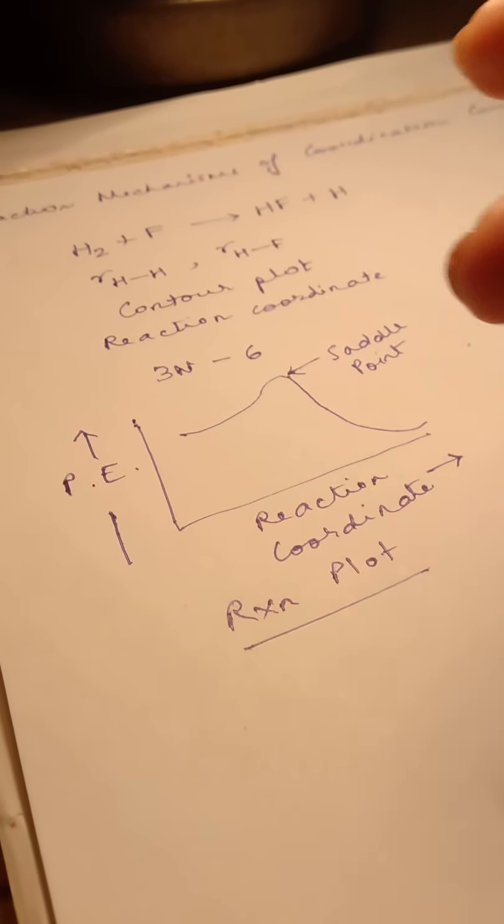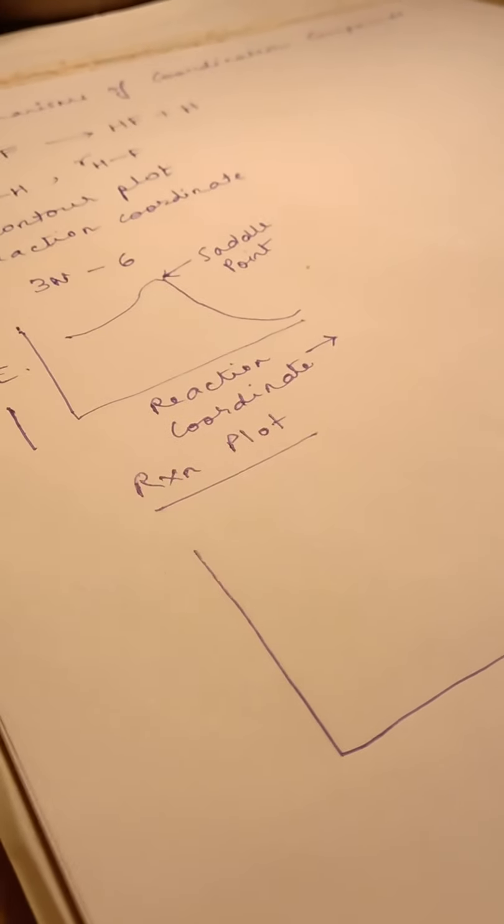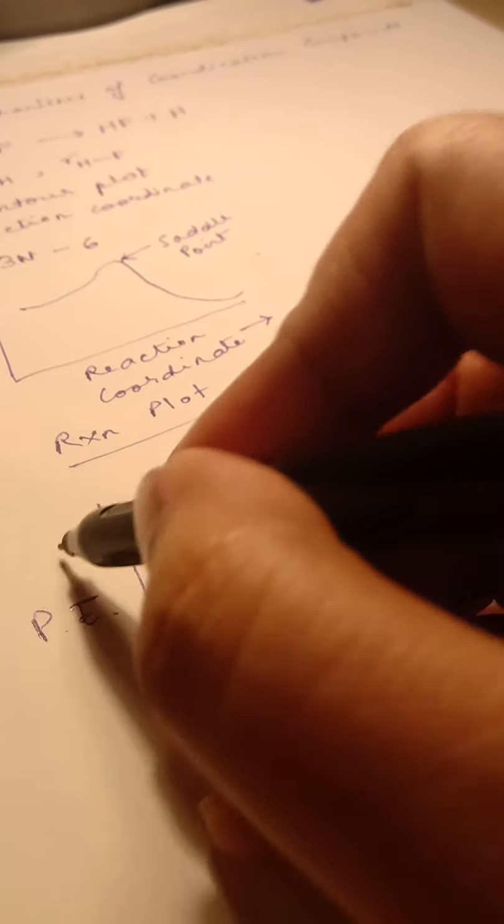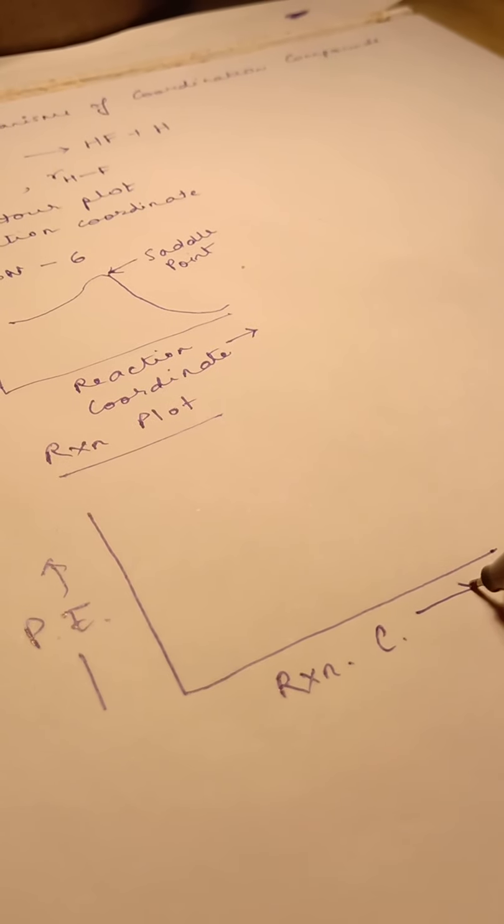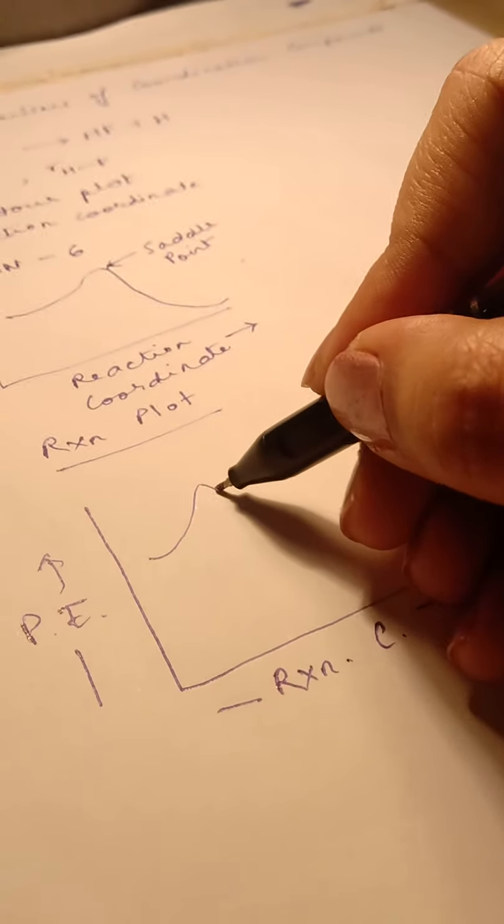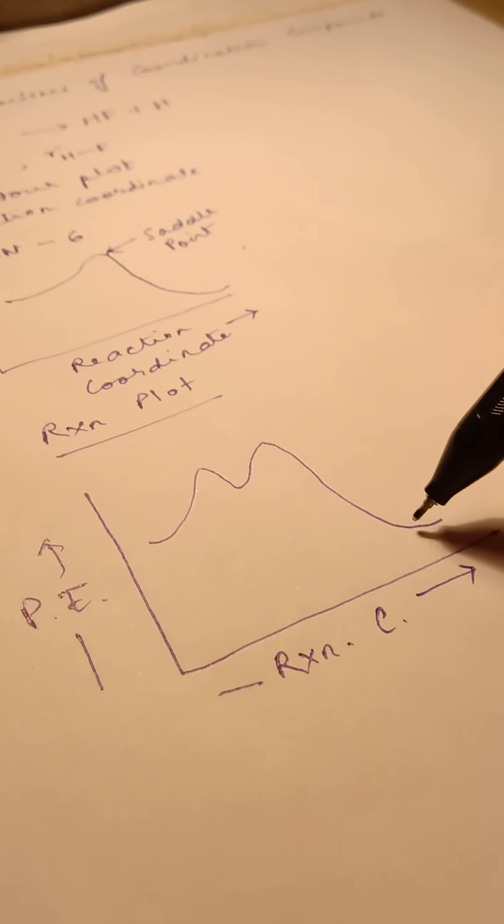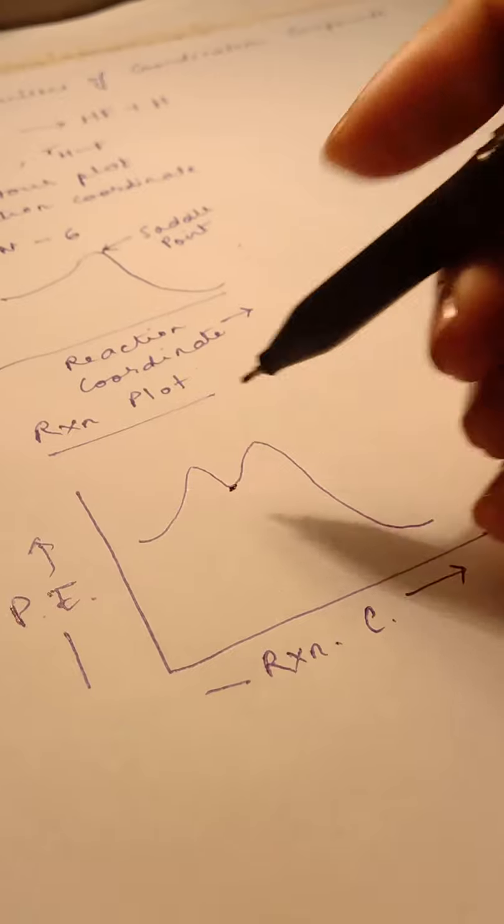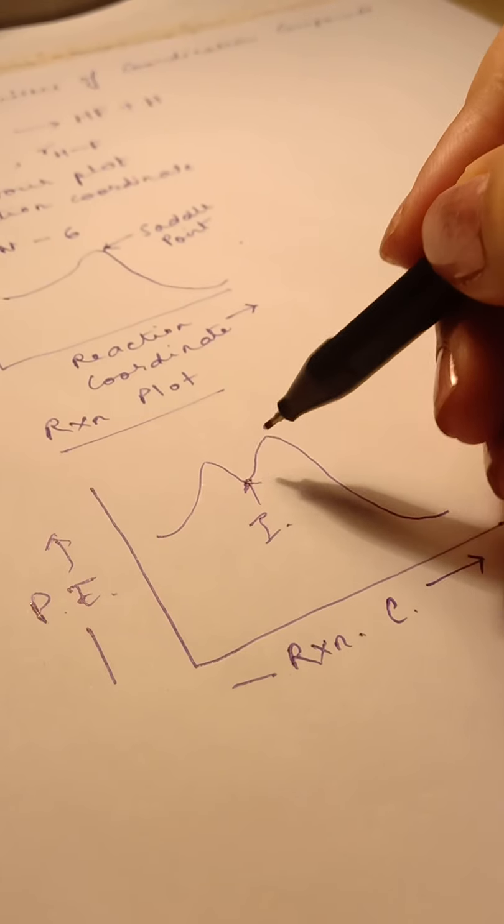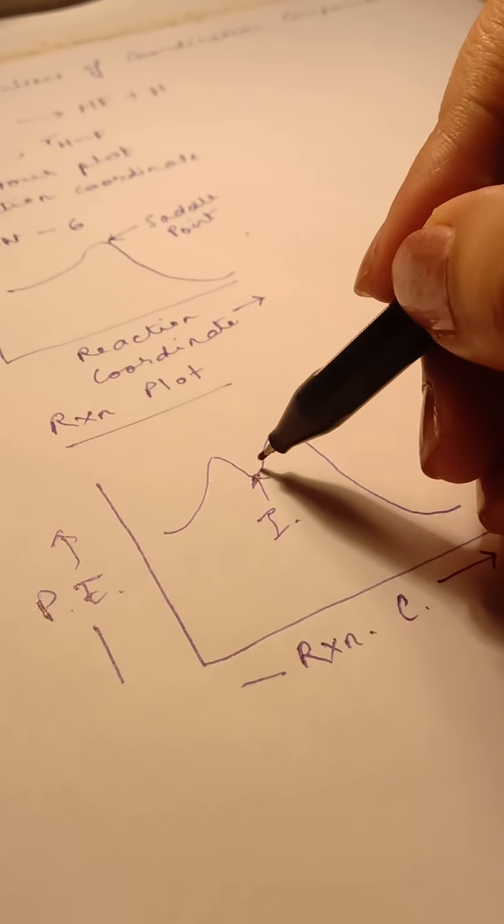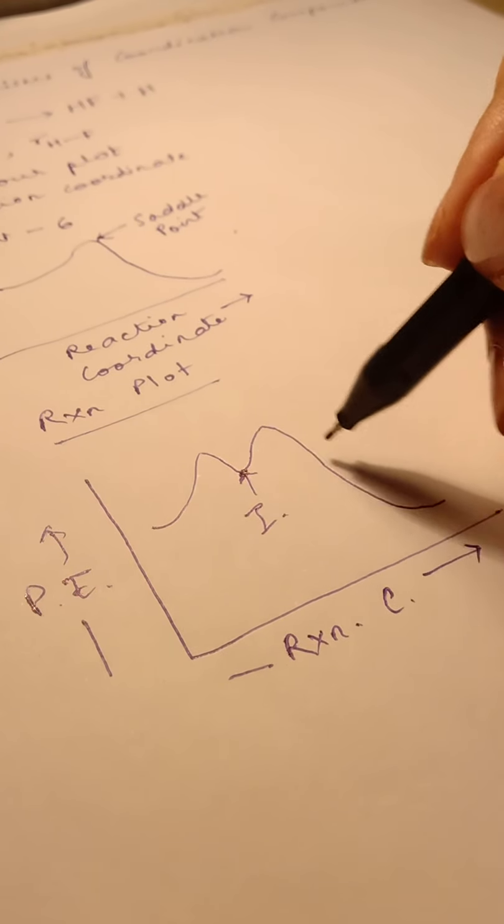You can also have a reaction plot in which you have potential energy versus reaction coordinate, and it is a humped structure like this. This is the reactant and this is the product, and this indicates presence of an intermediate. This valley indicates the presence of an intermediate. The intermediate is of slightly lower energy but it cannot stay forever. Ultimately it will finally form the products.